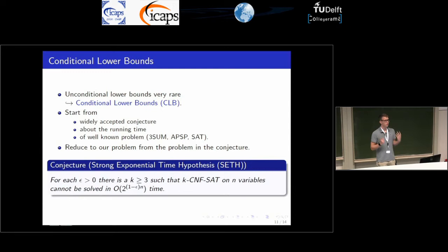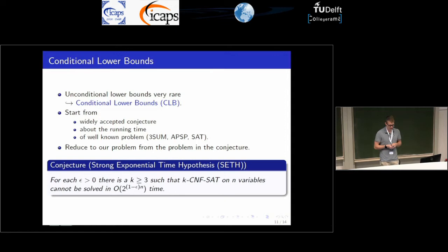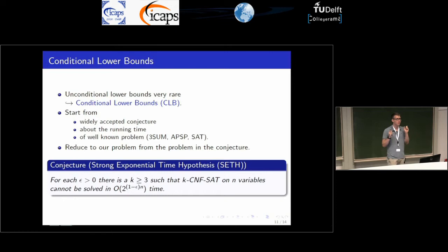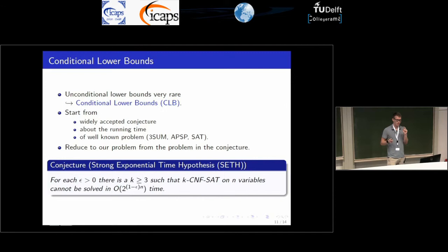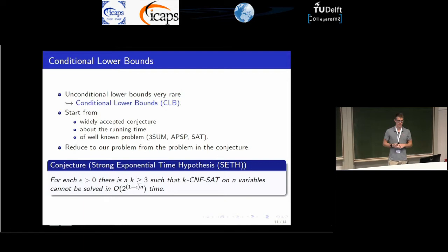What are conditional lower bounds? Unconditional lower bounds are very rare — some of you may know the n log n bound for sorting. Complexity theorists came up with a newer technique: they start from a widely accepted conjecture about the running time of a well-known problem, such as all-pairs shortest paths (n³), satisfiability, or 3-SUM (n²). Then you reduce from that problem to the problem you want to show has a running time at least as hard as the conjectured running time.